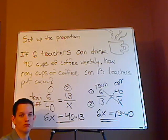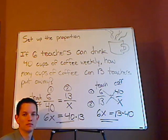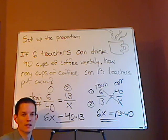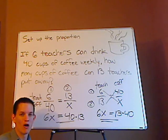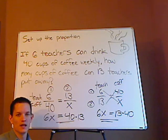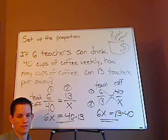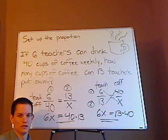So that's it — just make sure everything's lined up: teachers with teachers, coffee with coffee, and the first relationship lined up with the second relationship.